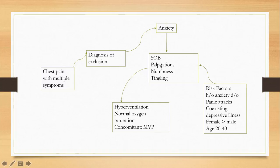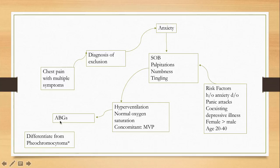If ABGs are done, you will see low carbon dioxide levels due to hyperventilation. Another important condition to consider in the differential is pheochromocytoma, which can present with exactly the same symptoms — shortness of breath, palpitations, numbness and tingling — along with very high blood pressure and very high heart rate. Pheochromocytoma is typically episodic: symptoms appear in attacks and then resolve.